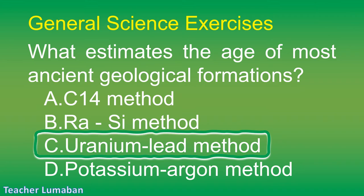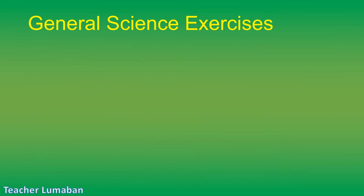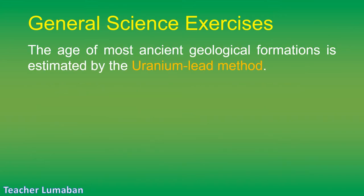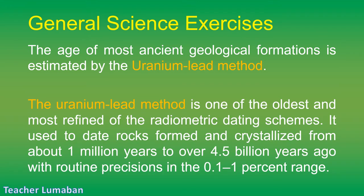The correct answer is Letter C: uranium-lead method. The age of most ancient geological formations is estimated by the uranium-lead method. The uranium-lead method is one of the oldest and most refined of the radiometric dating schemes. It is used to date rocks formed and crystallized from about 1 million years to over 4.5 billion years ago, with routine precisions in the 0.1 to 1 percent range.